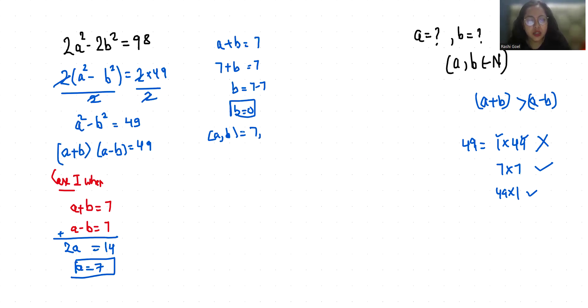Now case second: a+b is 49 and a-b is 1. Again we are going to add.